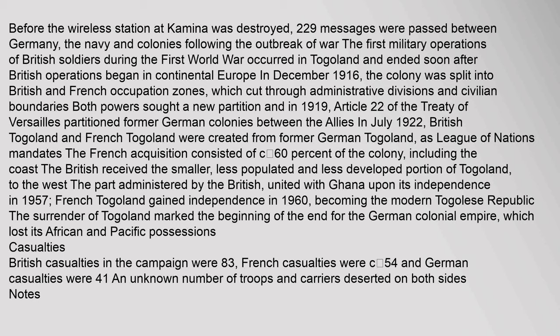In July 1922, British Togoland and French Togoland were created from former German Togoland as League of Nations mandates. The French acquisition consisted of approximately 60% of the colony, including the coast. The British received the smaller, less populated, and less developed portion of Togoland to the west, which united with Ghana upon its independence in 1957. French Togoland gained independence in 1960, becoming the modern Togolese Republic. The surrender of Togoland marked the beginning of the end for the German colonial empire, which lost its African and Pacific possessions. British casualties in the campaign were 83, French casualties were approximately 54, and German casualties were 41.